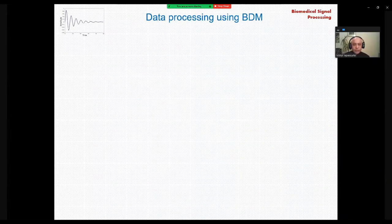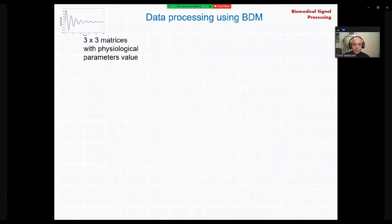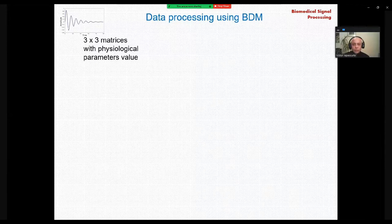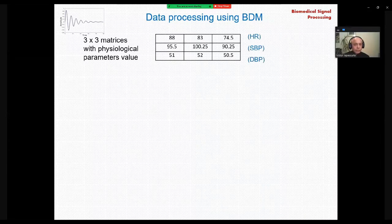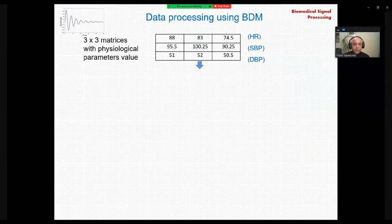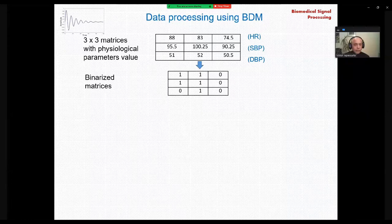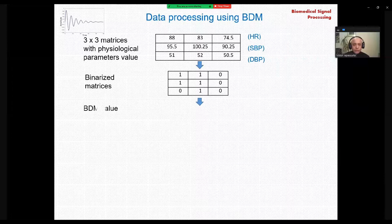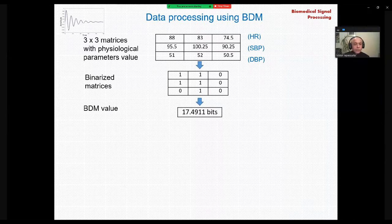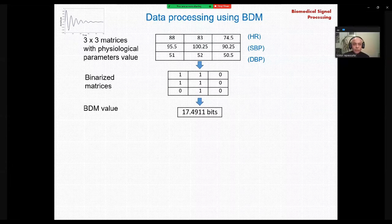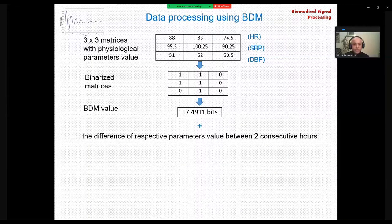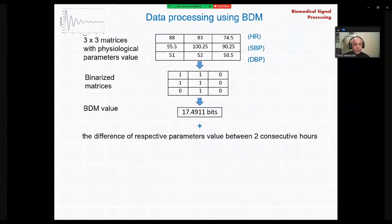Data processing using BDM supposes preparing the data in a special manner. Here, first of all, original data needs to be reshaped into 3x3 matrices with physiological parameter values as per the screen, where rows are for parameters, and columns for parameter values in three subsequent samples. Then, we will binarize this data using a threshold, the mean value per row, and finally, using the calculator, we can estimate the algorithmic complexity of such a matrix that represents or encodes the condition of a certain body system or function. And we will also need the difference of respective parameter values between two consecutive hours for three hours to come.